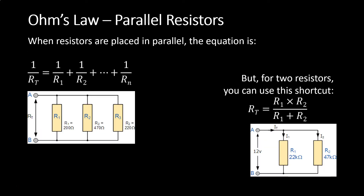When resistive or inductive elements are in parallel, if there are more than two items in parallel, the equation is: 1 over the total resistance is equal to 1 over R1 plus 1 over R2, etc., until you have all of the reciprocals added together. If you're only talking about two resistors or two inductors, you can use the equation: total resistance equals R1 times R2 divided by R1 plus R2. This will be the more common equation you will be using for your entire career as an audio engineer.